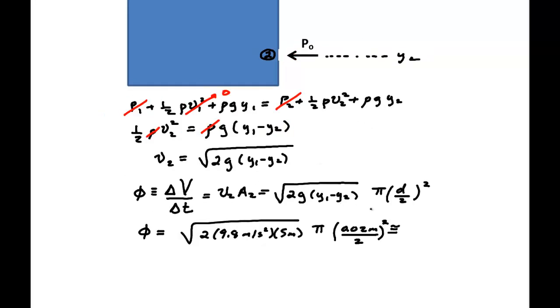And I get 3.11 times 10 to the minus 3 meters cubed per second. Now we could rewrite that in terms of, if we wanted, centimeters cubed. So it would be 3.11 times 10 to the third. There is a million centimeter cubed in a meter cubed.